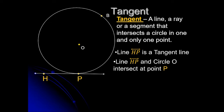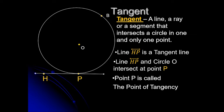Aside from secants, we can also have tangents drawn in circle O. A tangent is a line, ray, or segment that intersects a circle in one and only one point. Line HP is a tangent line, and it intersects circle O at point B. Point B is called the point of tangency.